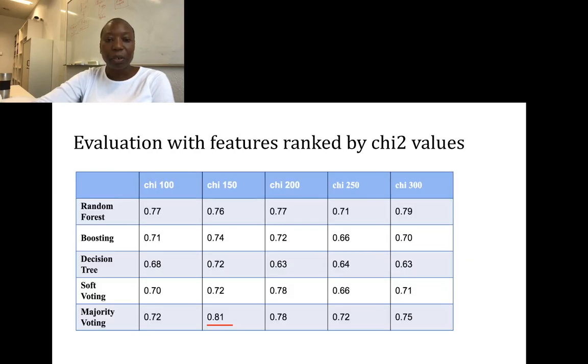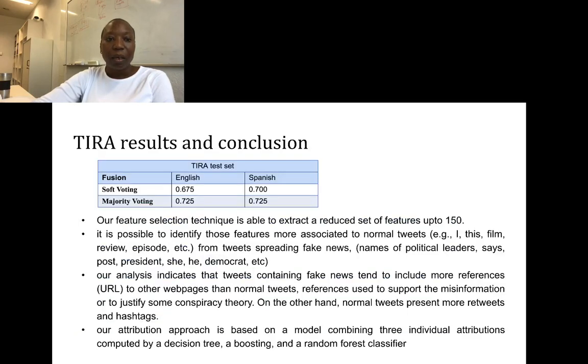Soft voting and majority voting was applied on the validation dataset, and it can clearly be seen that the majority voting outperforms the soft voting. With only 150 features, the majority voting provides the highest accuracy. In the test dataset, the majority voting still outperforms the soft voting.